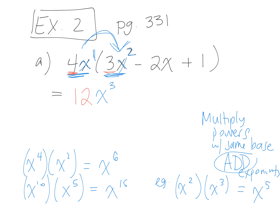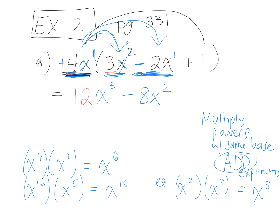Next: 4x to the power of 1 times negative 2x. Positive times negative is negative. 4 times 2 is 8, so negative 8. X to the power of 1 times x to the power of 1 is x to the power of 2. So negative 8x squared. Then, last: 4x to the power of 1 times 1. What's 4x times 1? Positive 4x — anything times 1 is just the term itself. That's the answer.